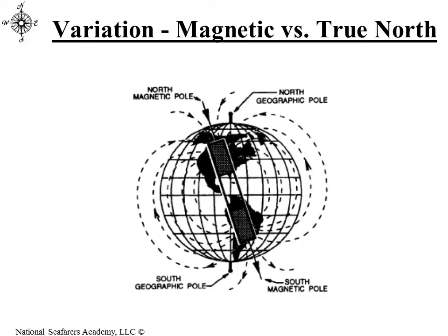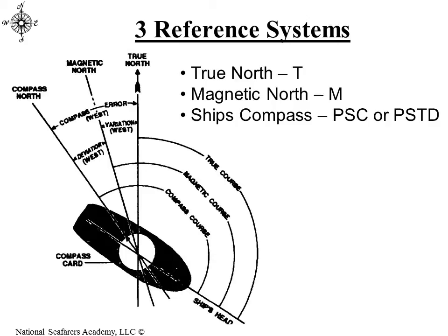You've already had the lecture which talks about the true north pole and the true south pole and how the earth revolves around those two poles, and you've already discussed the magnetic north and south poles and the differences between the magnetic north and south pole and the geographic north and south pole. In this lecture, we're going to see how that pertains to navigation plotting. The three reference systems we're going to talk about are the true reference system, the magnetic reference system, and the ship's compass as a reference system.